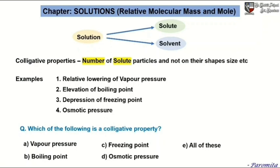Now let me ask you one question. Which of the following is a colligative property? A: vapor pressure. B: boiling point. C: freezing point. D: osmotic pressure. E: all of these.